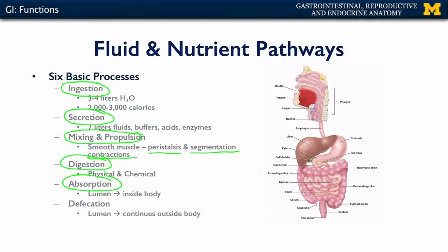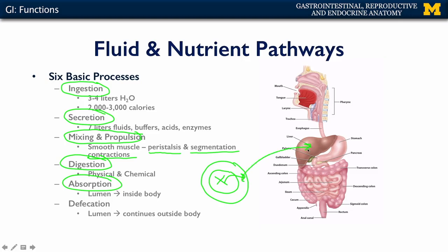The process of absorption moves materials from the lumen of the GI. If we conceptualize the gut tube, the ingested materials within that space are actually outside of the body, and we want to move those materials inside the body — into the capillaries, whether cardiovascular or lymphatic, so that we can move that material up to the liver for processing and send it out to the rest of the body.